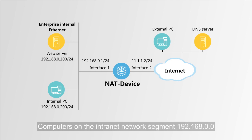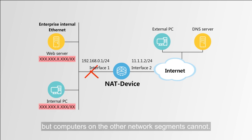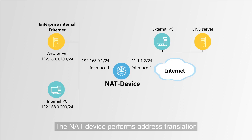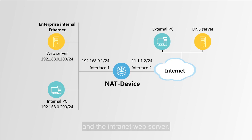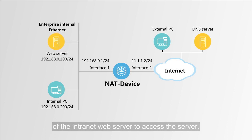Computers on the intranet network segment 192.168.0.0 with a 24-bit mask can access the internet, but computers on the other network segments cannot. The NITE device performs address translation only using the public IP addresses of the public interface and the intranet web server. Internet and extranet users can send requests to the public IP address and domain name of the internet web server to access the server.